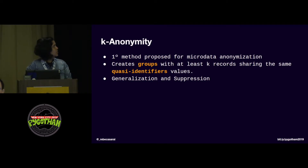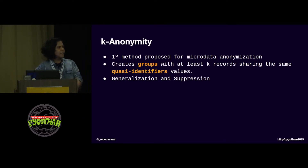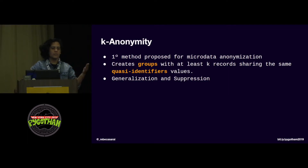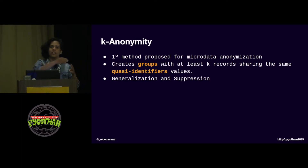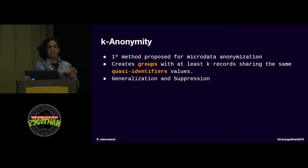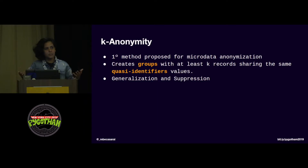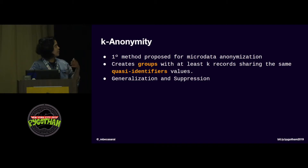A second method that tries to solve this is k-anonymity. Before going to the definition, I want to share an example. In the 1990s, the US Census did research to figure out the demographic patterns of US citizens. They found out that to uniquely identify a person you just need to know three unique attributes: zip code, date of birth, and gender. If you know just these three things, you can uniquely identify a person in the US Census database. These attributes are not personal information on their own, but when used together they can uniquely identify a person — they are named quasi-identifiers.